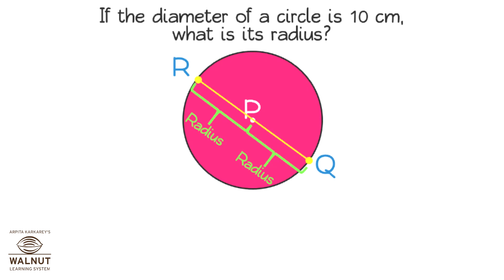If the diameter of a circle is 10 cm, what is its radius? Radius is always half the diameter. Radius is equal to diameter divided by 2. So it is 10 cm divided by 2, which is 5 cm. The radius is 5 cm.